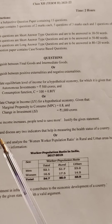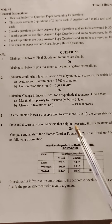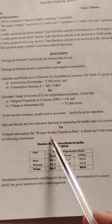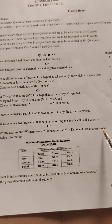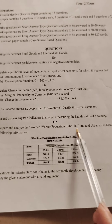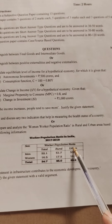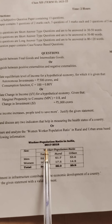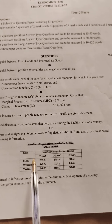Now we come to the next question, question number 4 — these are for 2 marks. The question is: Compare and analyze the women worker population ratio in rural and urban areas based on the following information. First, just go through the information. We need to look at rural and urban women population. The table shows worker population ratio in India for 2017-2019, with men, women, and total figures given.